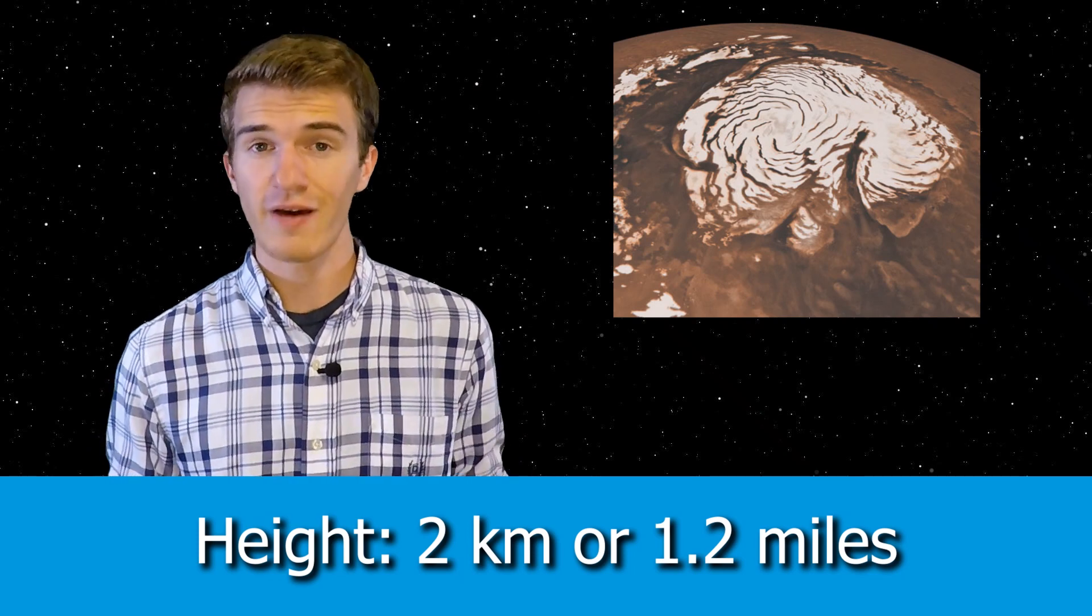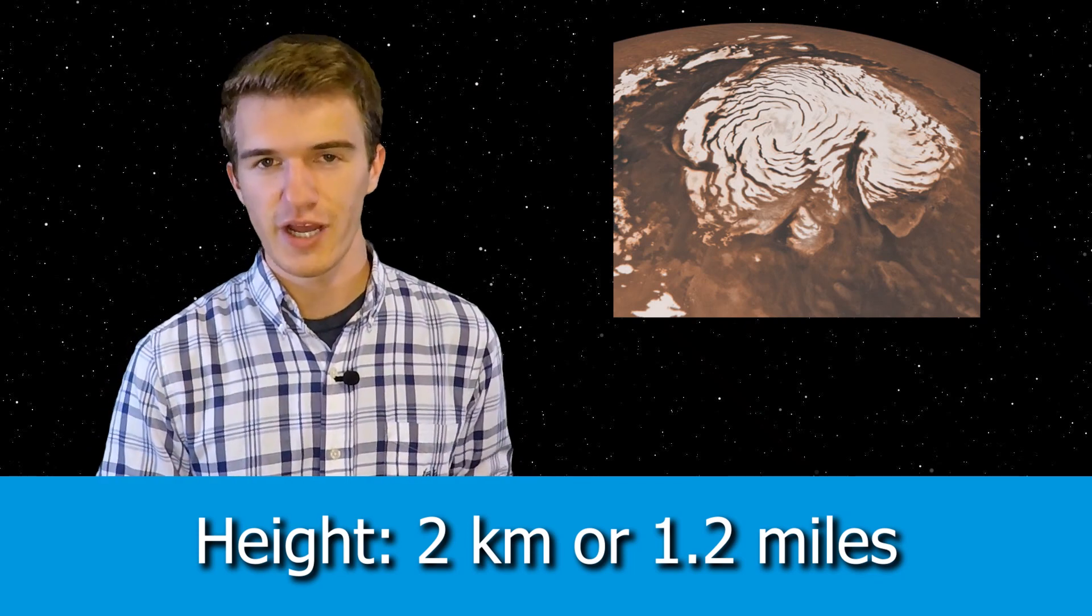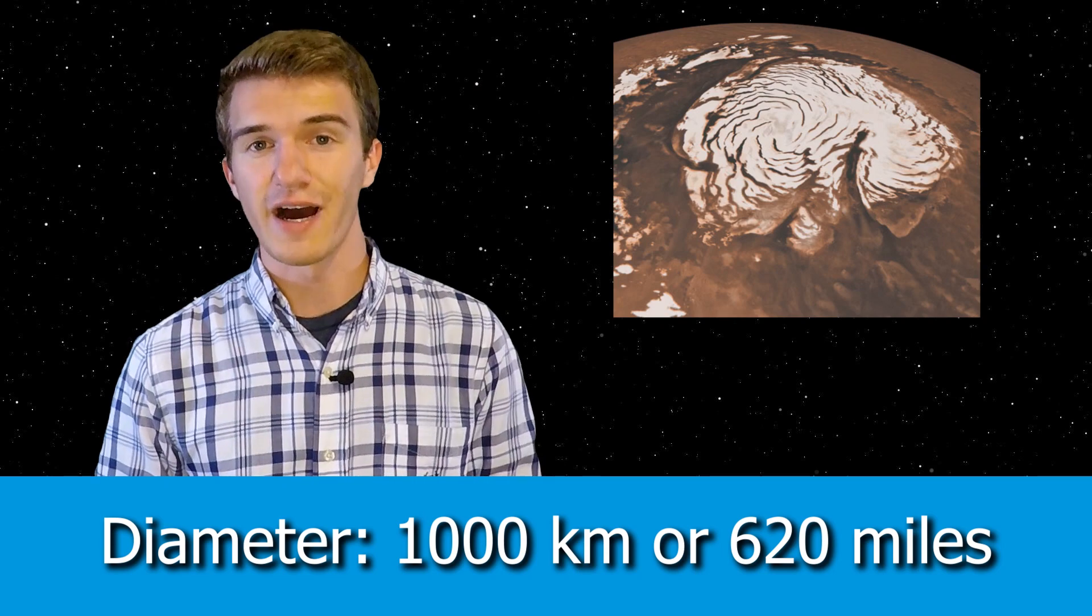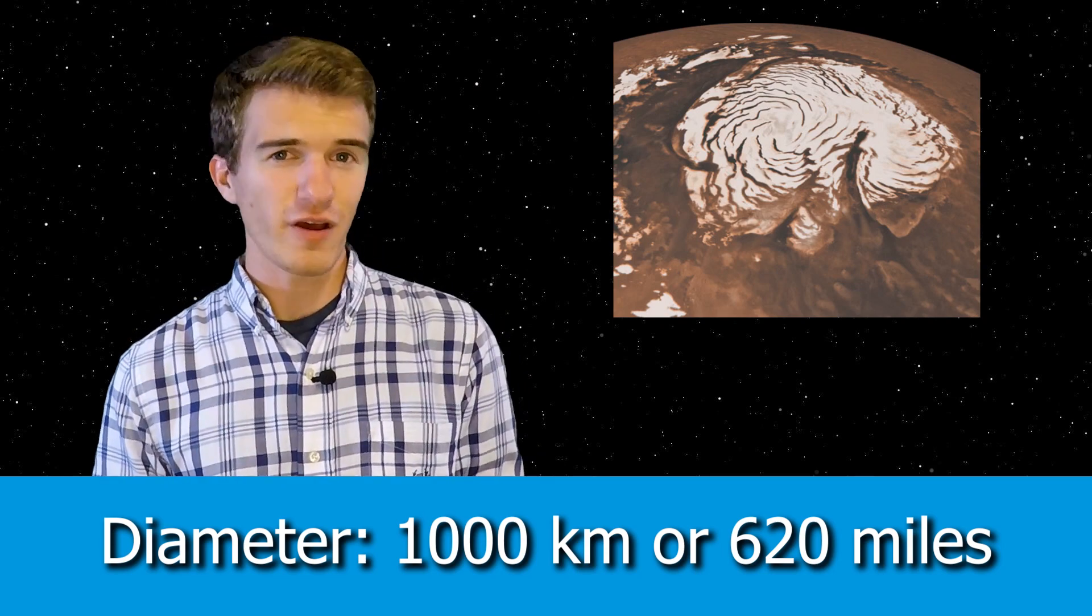Starting with the northern ice cap, it turns out that on average it rises about 2 kilometers above the local plane surrounding it in a dome-like shape, and it's about 1,000 kilometers in diameter. Therefore this is a relatively large part of the planet Mars, and it's very interesting to see truly how much ice is actually there.